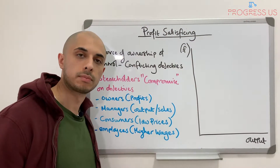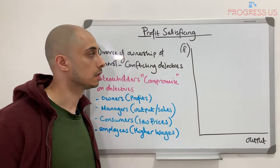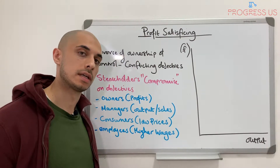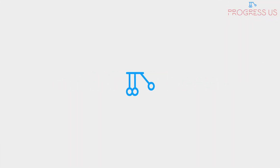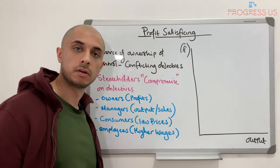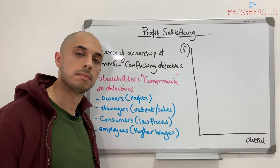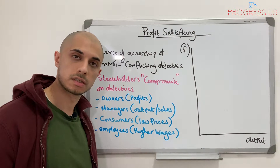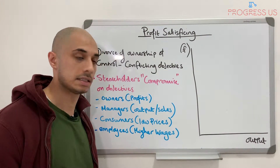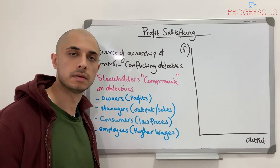In this video we're going to be looking at profit satisficing, another business objective that can be used in order to satisfy all stakeholders. This falls within the macroeconomics market structure subject, where this objective in particular is used in order to satisfy stakeholders in the firm.